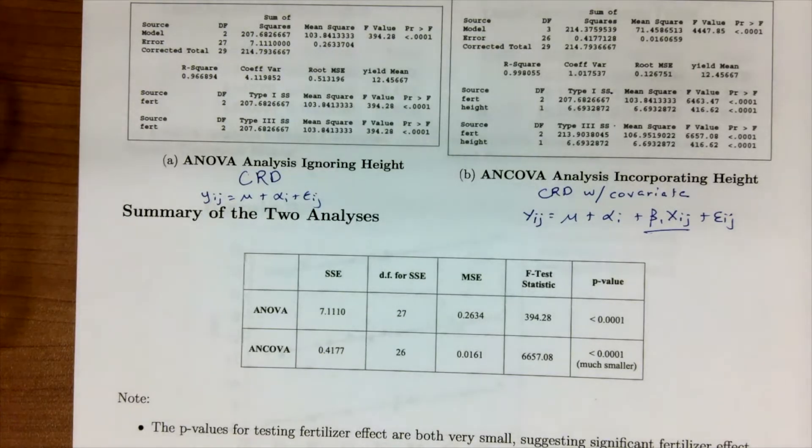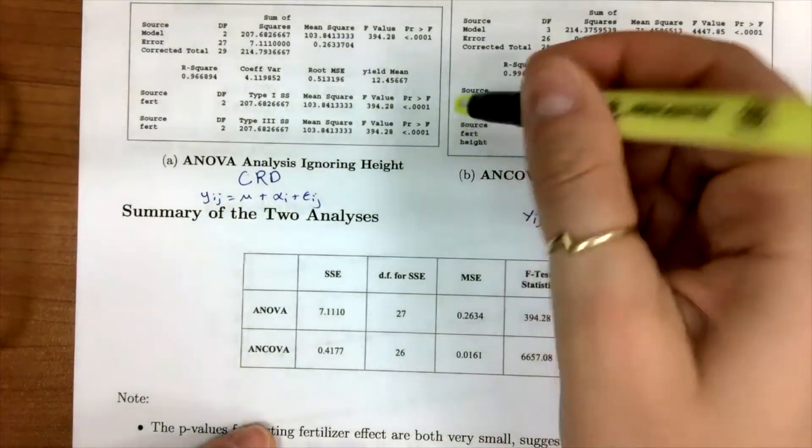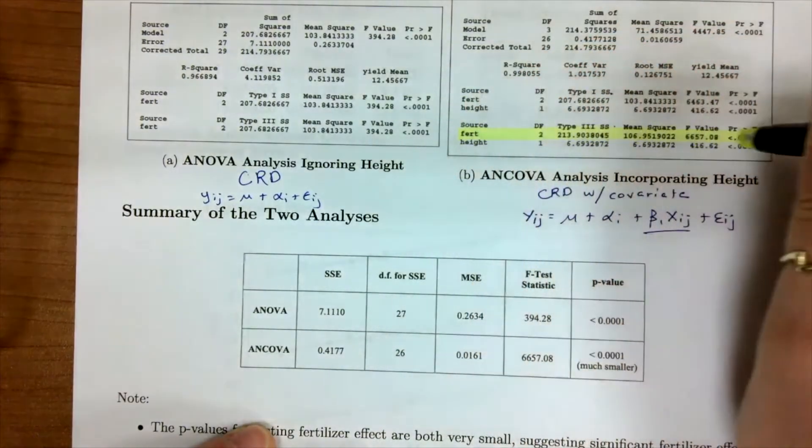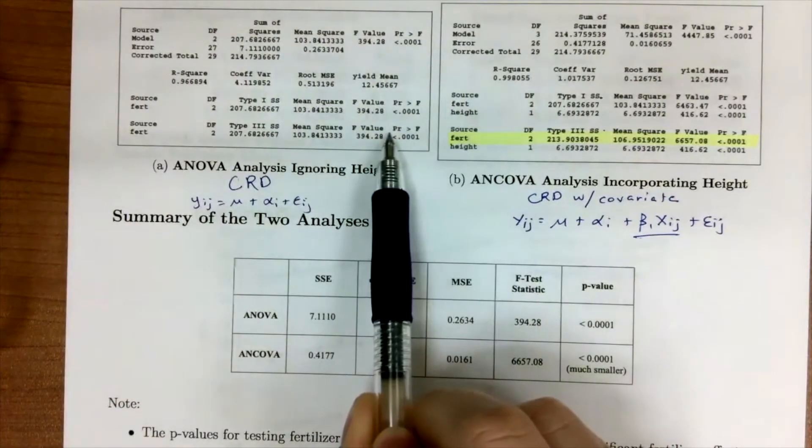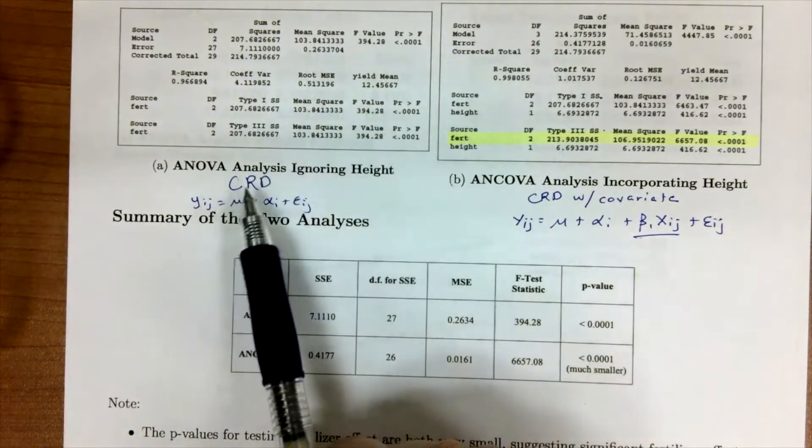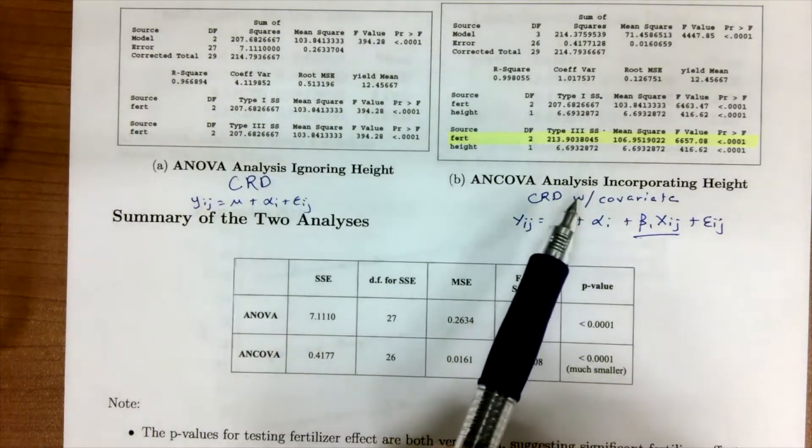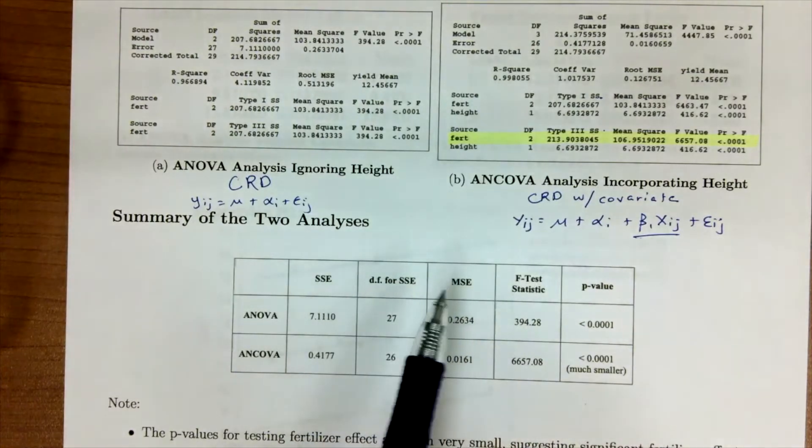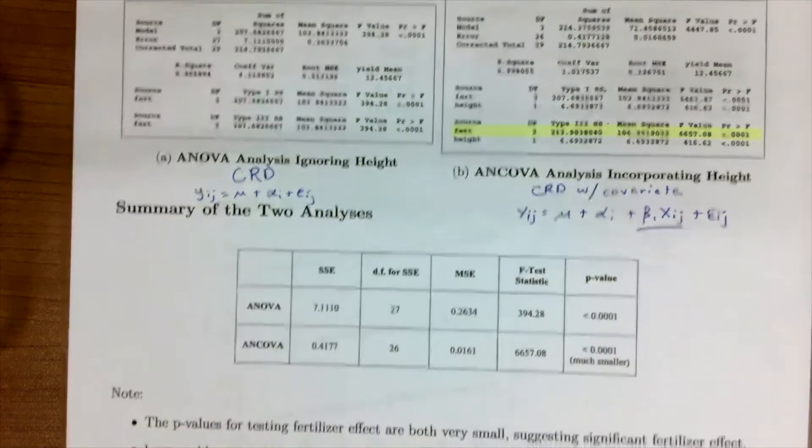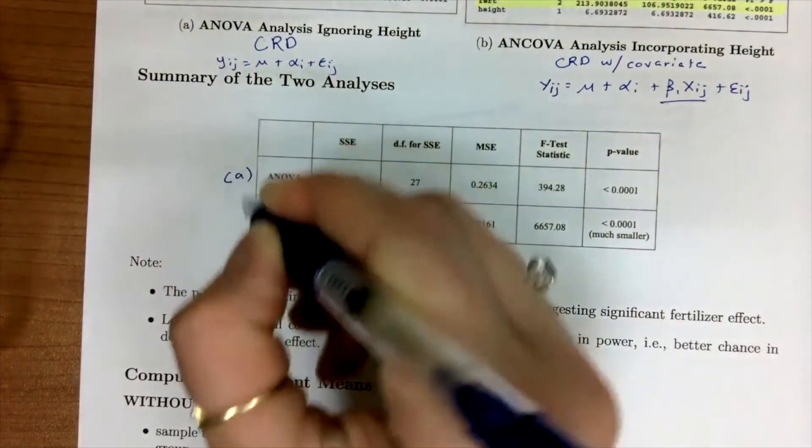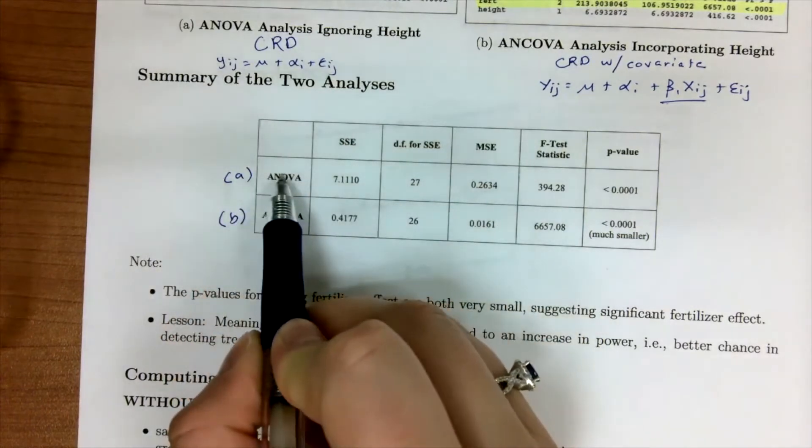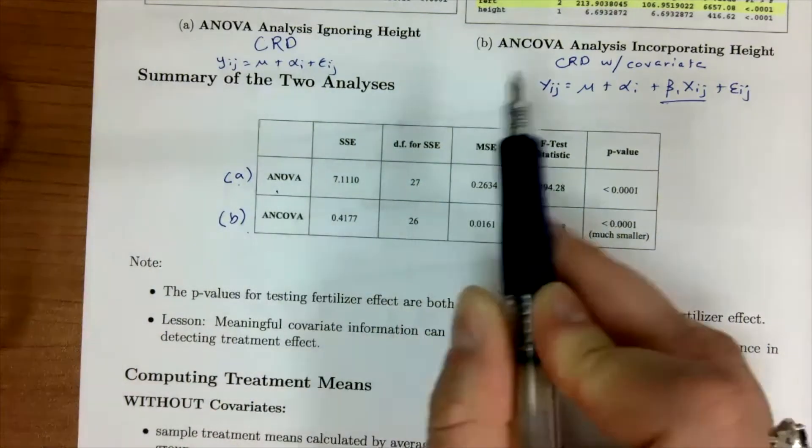We want to use the type 3 sums of squares. We want to be looking at this line right here when we're doing our analysis. Something else that we want to notice is between these two analyses of not incorporating and incorporating the covariate is looking at the sums of squares of error and the degrees of freedom for the error. We're going to scroll down to this table right here.